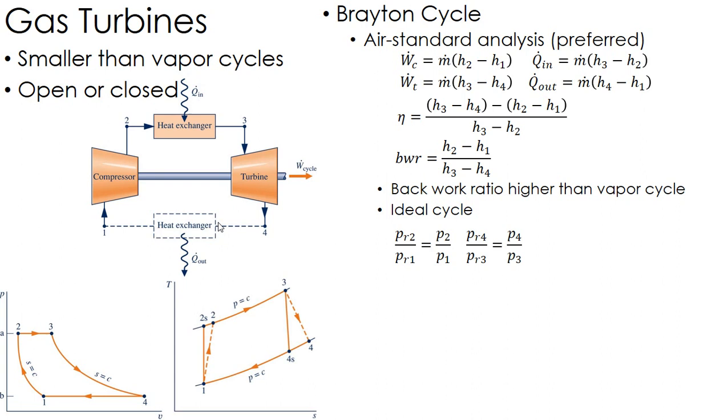Keep in mind that this pressure ratio is the same, which is to say P2 over P1 is the same - I guess it's P3 over P4 - because the pressure in the heat exchangers is going to be constant. We use those pressure ratios to help set those states.